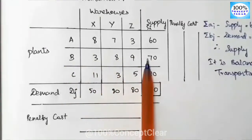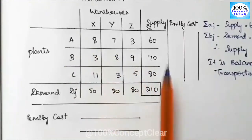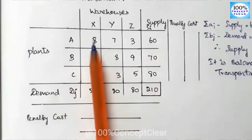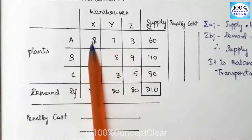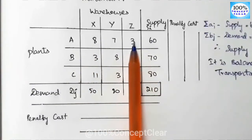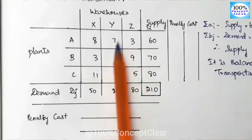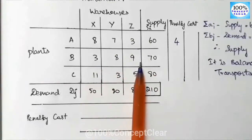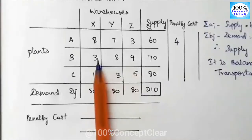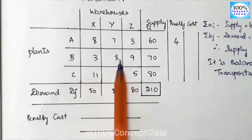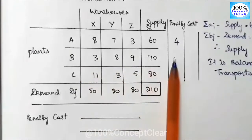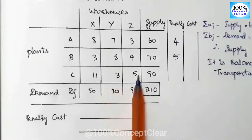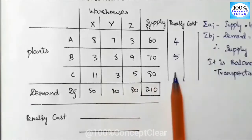For VAM, we choose the two least values in each row and column. First row is 8, 7, 3 — the least value is 3, next least is 7, so 7 minus 3 equals 4. Second row: least is 3, next least is 8, so 8 minus 3 equals 5. Third row: least value is 5, next is — so 5 minus 3 equals 2.